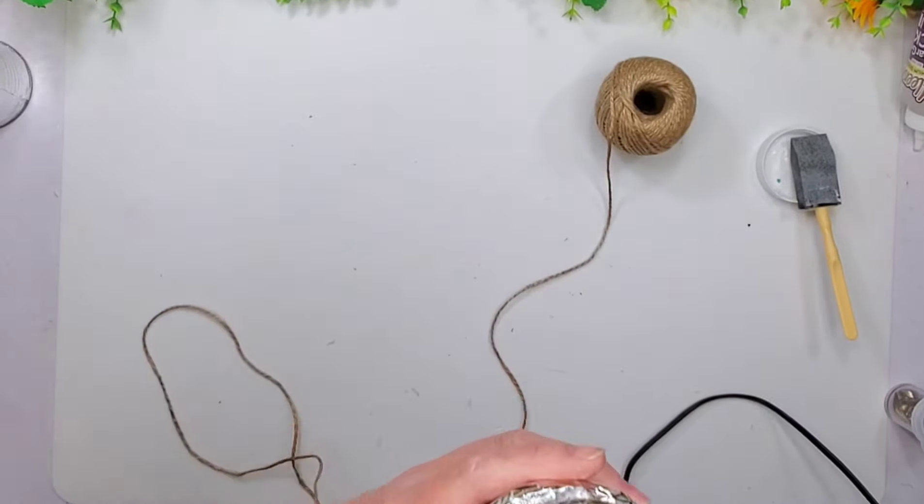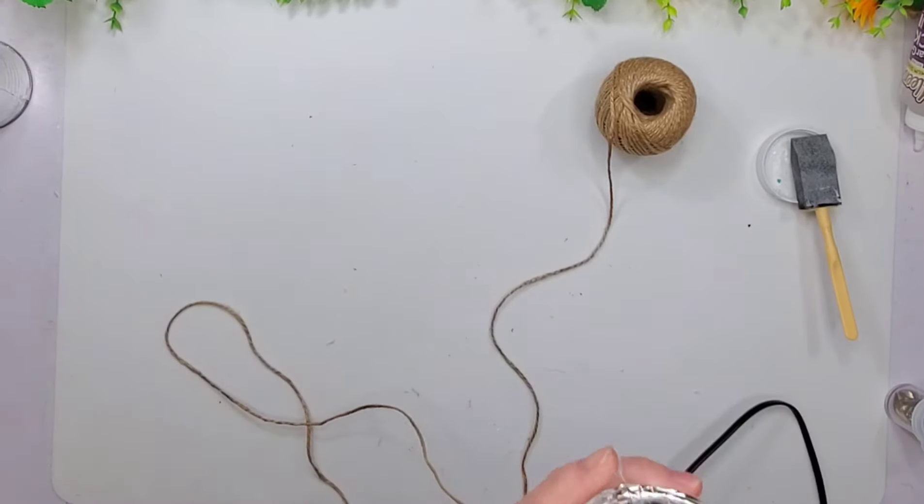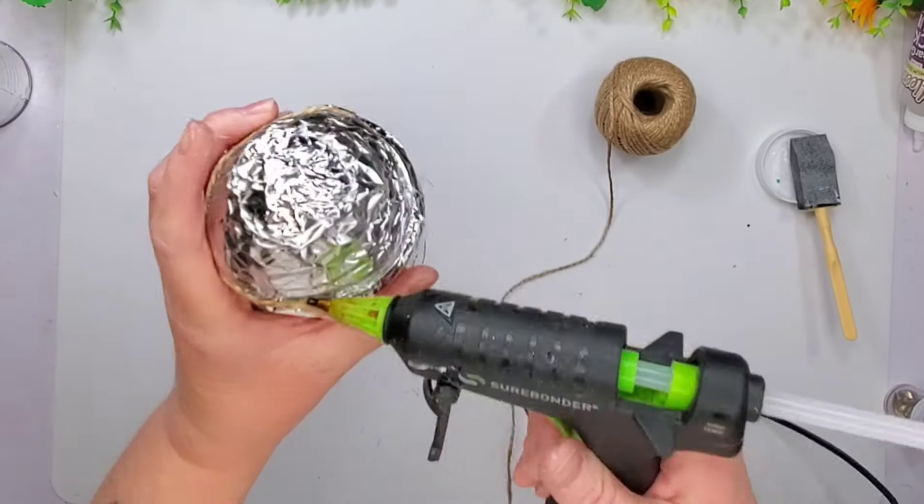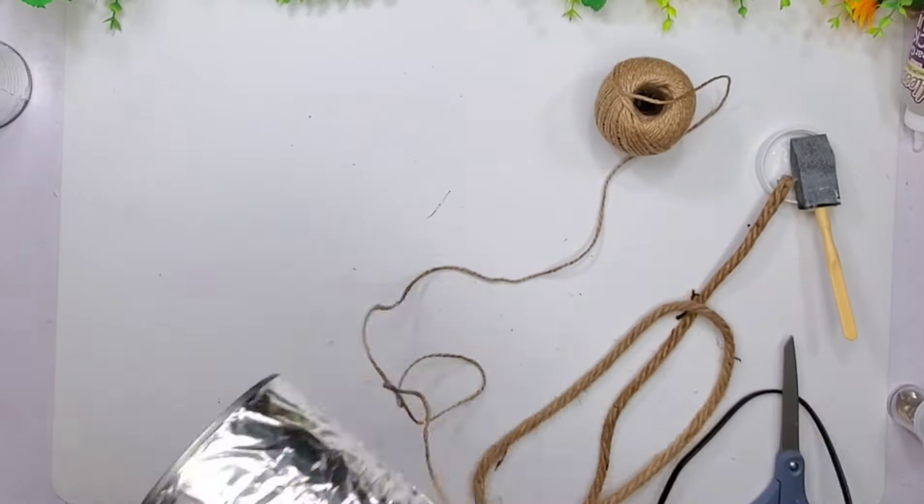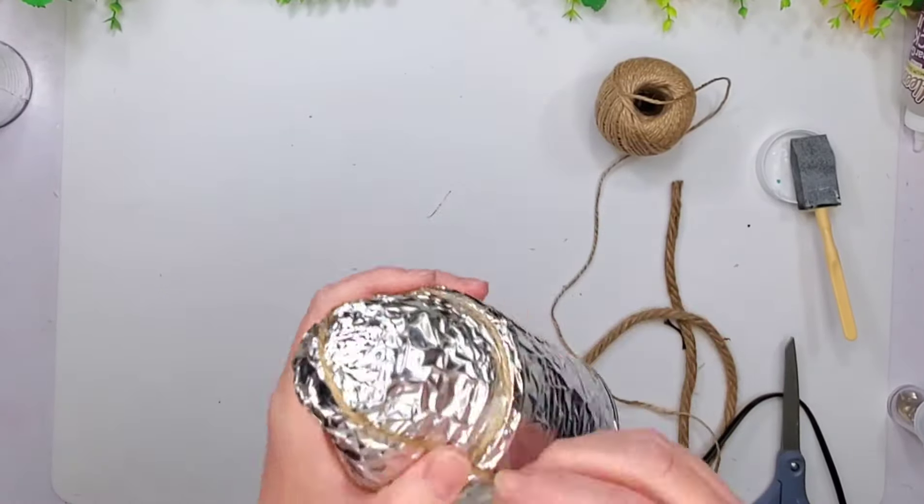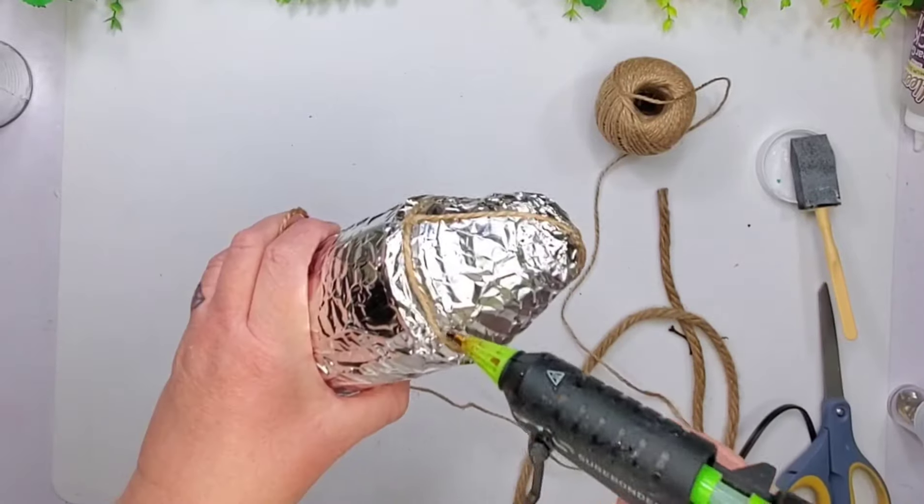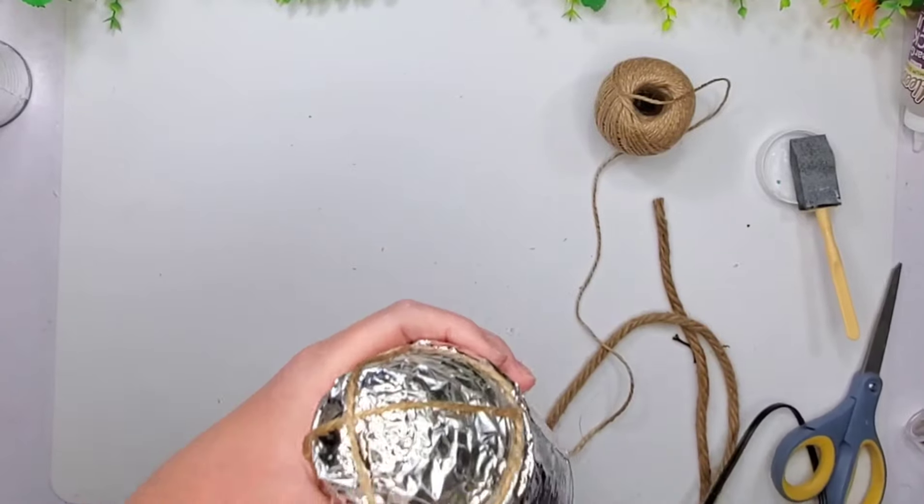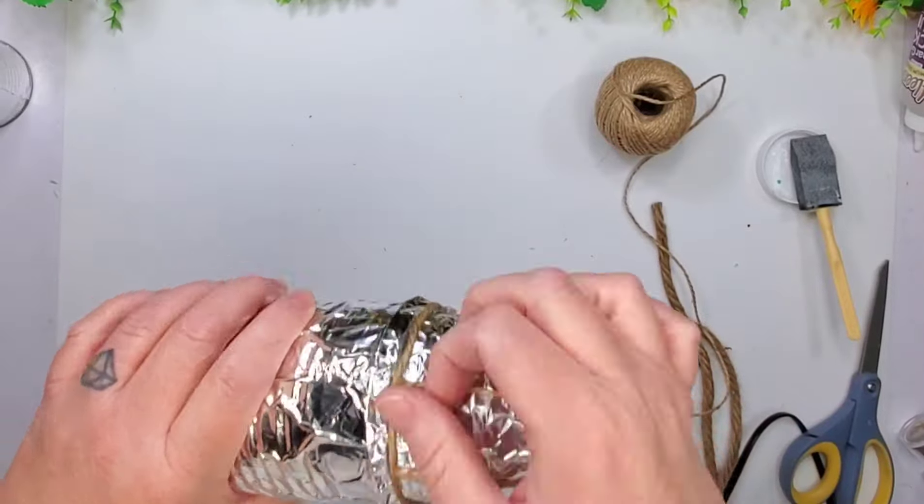And then here we go. I cover them both with the foil. And now we're taking this jute cord that I picked up from the Dollar Tree and I am going around the entire top there where the funnel and the can meet together.